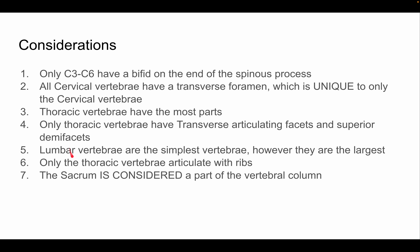Only thoracic vertebrae articulate with the ribs — T1 through T12 correspond with ribs 1 through 12 respectively. Lastly, it's important to remember that the sacrum and the coccyx are both considered part of the vertebral column. I hope this video cleared everything up and I hope you do well — thank you.